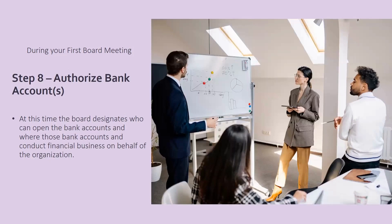Next, you will authorize the bank account for the organization. Typically, the founder will have a list of banks — maybe three banks — that they have researched, determining the amount required to open and the interest rates. At this time, you can decide on which bank you want to go with. You can also decide on how many signers — whether one person or two — and who that will be, such as the chair and the treasurer, or just the chair. All that information will be decided and documented in your paperwork.